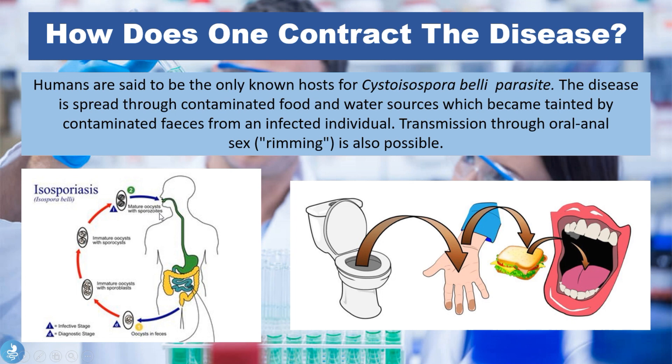Looking at this image on the left side of the screen: the mature oocysts — which are the eggs of the parasite — with sporozoites are ingested. The oocysts develop within the intestine and are released into the feces. Immature oocysts then develop with sporoblasts and sporocysts, and then one can ingest the mature oocysts with sporozoites again, continuing the cycle. The disease is also transmitted through the oral-fecal route, which includes oral-anal sex.